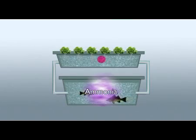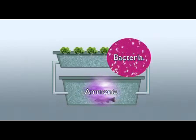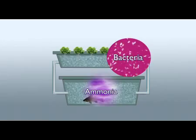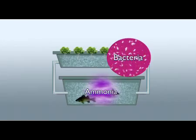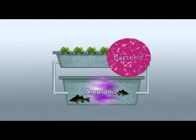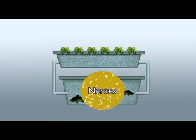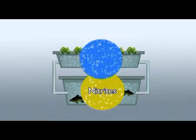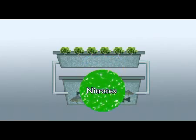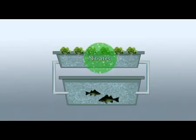In the fish tank and in the grow bed we have good bacteria that forms naturally — naturally occurring good bacteria. There are two basic types of bacteria. The first one converts the ammonia to nitrite, and the second group of bacteria converts the nitrite to nitrate. And then the nitrate of course is able to be used by the plants.